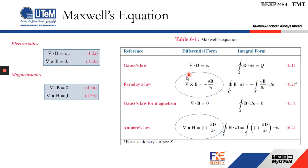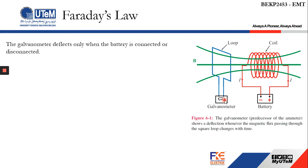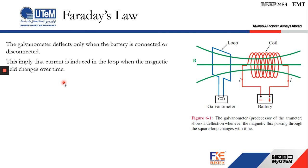Faraday's law states that if you have an experimental setup with a coil and battery close to a loop, under normal static conditions you won't see any movement in the galvanometer. The galvanometer deflects only when the battery is connected or disconnected — there will be a temporary deflection, but after a few seconds it returns to zero. This implies that current is induced in the loop only when the magnetic field changes over time.